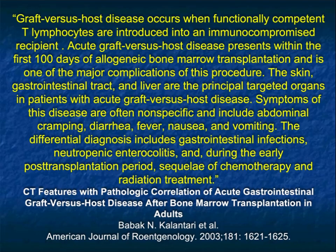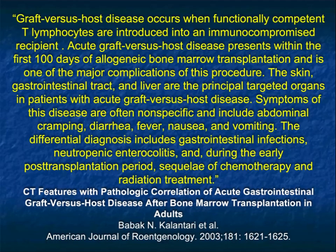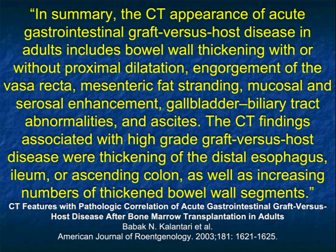Graft-versus-host disease occurs when functionally competent T-lymphocytes are introduced into an immunosuppressed recipient. Acute graft-versus-host disease presents within the first 100 days of allogeneic bone marrow transplant and is one of the major complications of the procedure. The skin, GI tract, and liver are the principal targeted organs. Symptoms include abdominal cramping, diarrhea, fever, nausea, and vomiting. Differential diagnosis includes GI infections, neutropenic colitis, and in the early post-transplant period, sequela of chemotherapy and radiation therapy.